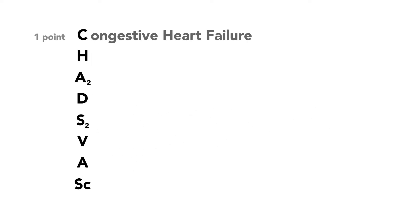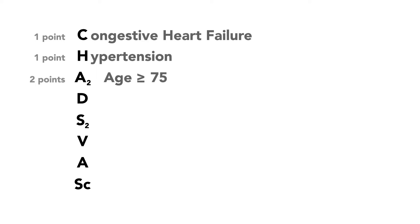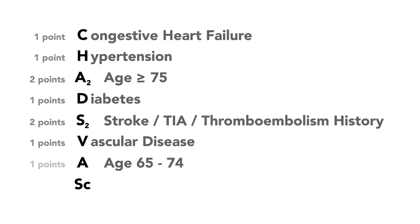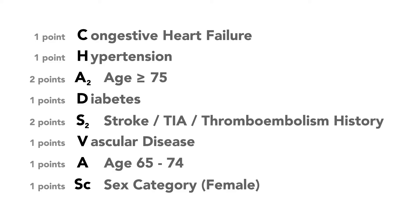The components include: C for congestive heart failure, H for a history of hypertension, A for age greater than or equal to 75 which awards two points, D for a history of diabetes, S for a history of stroke, TIA, or thromboembolism which also awards two points, V for vascular disease such as a history of coronary artery disease or peripheral arterial disease, A for age between 65 and 74 years which awards one point, and Sc for sex category where being female gives you one point.